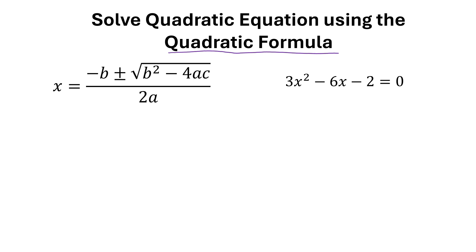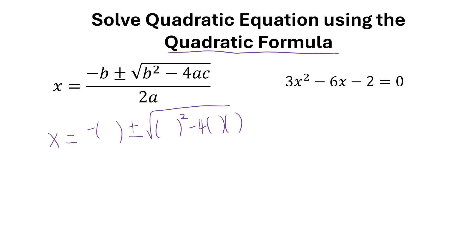In order to use this formula, I need to identify my a, b, and c. I'm going to rewrite this equation and place a placeholder for each letter. So instead of writing negative b, I'm going to write negative parentheses, plus or minus square root of b squared minus 4 times a times c, and then all over 2a, which is two parentheses.